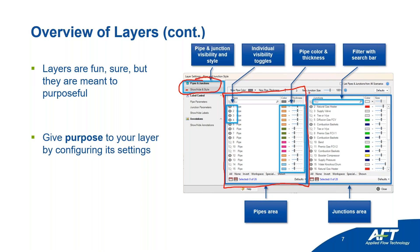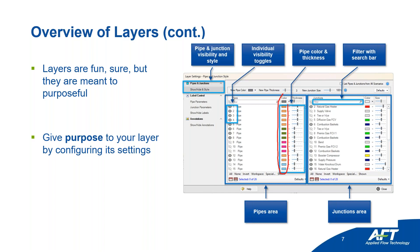In the settings, you have your pipes — every pipe in your model — which you can toggle on or off to show in that layer. Then you have your junction section you can also toggle. You can also change the colors of things within the layer or the thickness of the pipe and equivalents for junctions. For example, in a chilled water system with cold supply and hot return, you might color cold supply blue and hot return red.